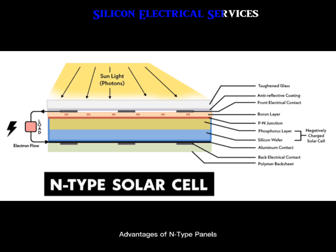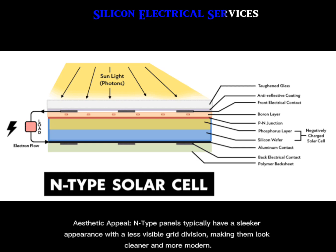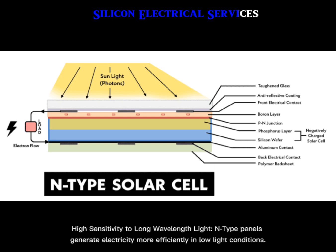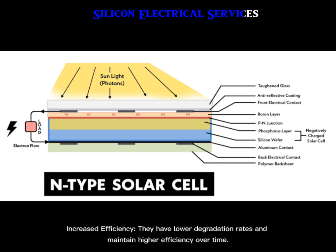Advantages of N-Type panels. Aesthetic appeal: N-Type panels typically have a sleeker appearance with a less visible grid division, making them look cleaner and more modern. Longer warranty periods: these panels often come with longer warranties due to the premium components used. High sensitivity to long wavelength light: N-Type panels generate electricity more efficiently in low-light conditions. Increased efficiency: they have lower degradation rates and maintain higher efficiency over time. Better temperature tolerance: N-Type panels perform better at higher temperatures.